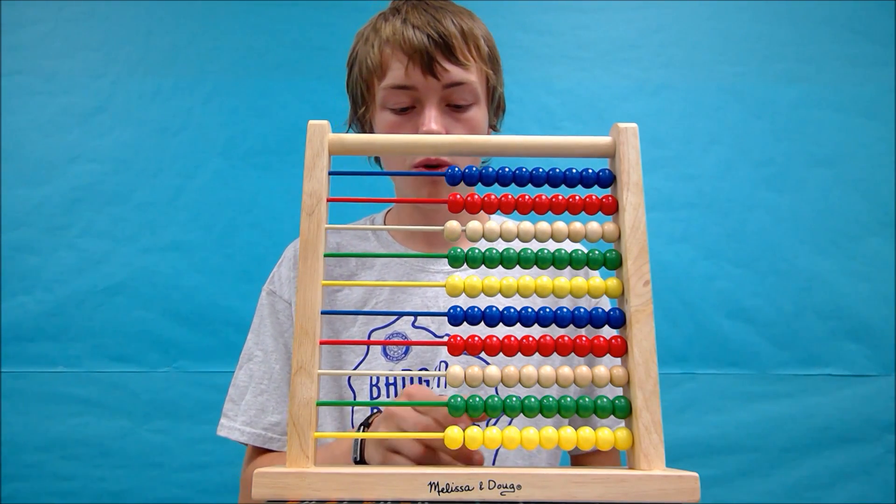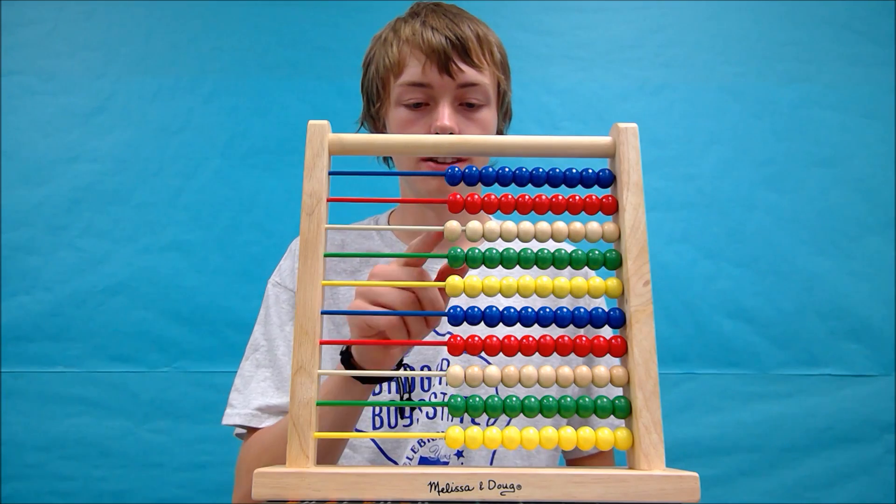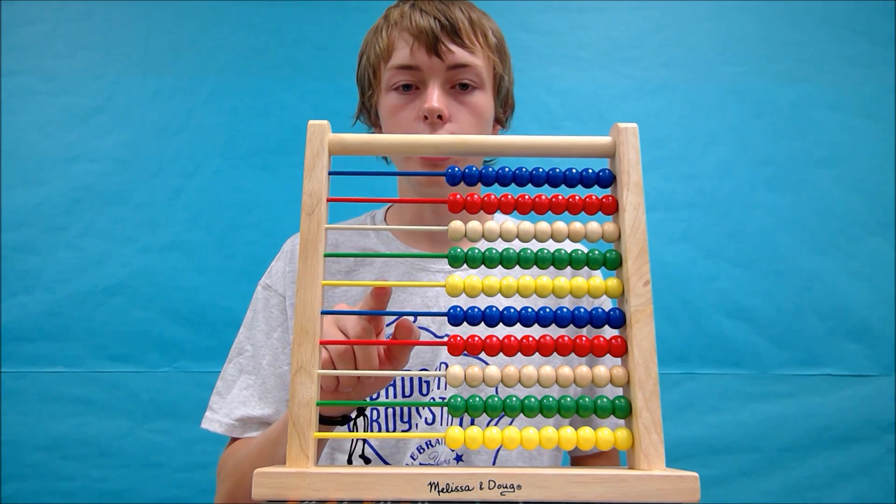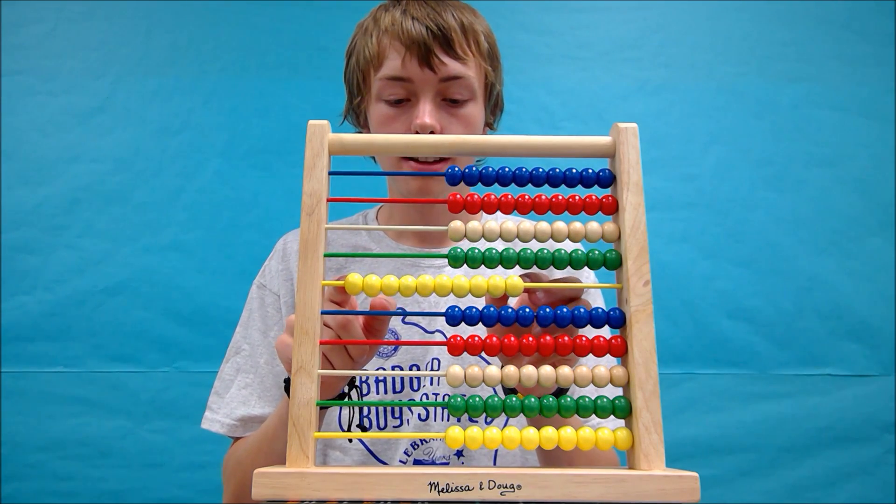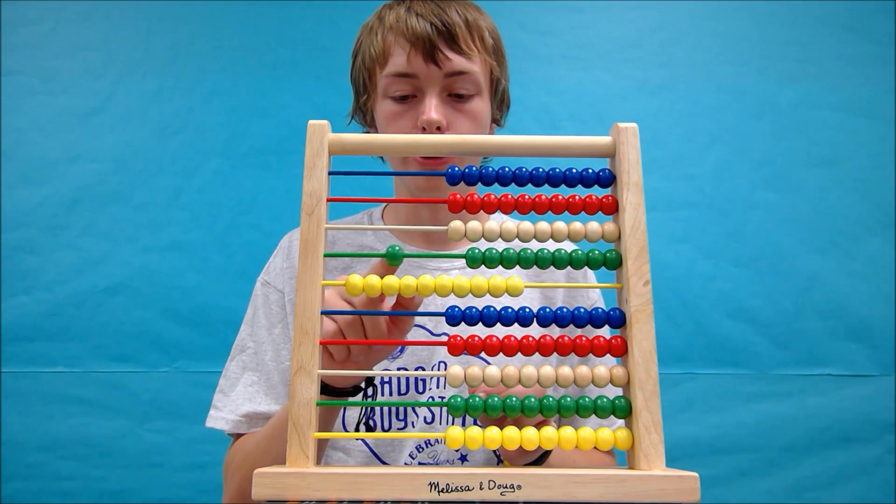Now, like I was explaining before, anywhere on the abacus, 10 beads of the row below equal one bead of the row above. So in this case, 10 yellow beads equals one green bead.